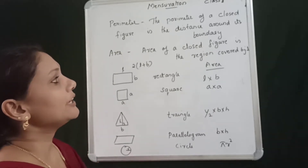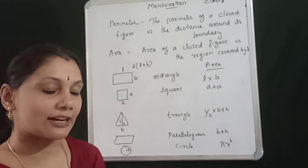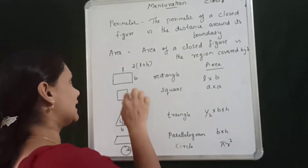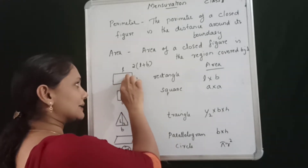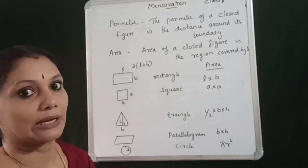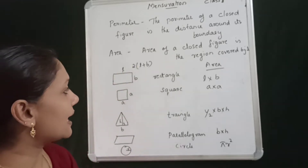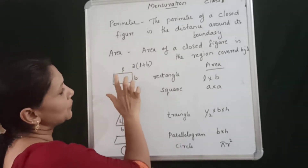Area. Area of a closed figure is the region covered by it. This is a boundary. This is an area.